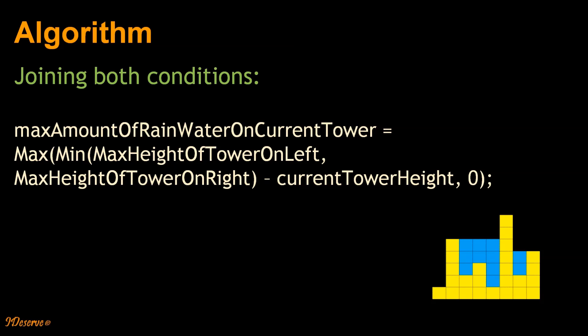So we can join both the previous conditions and it would look something like this. We just have included the previous formula with max of existing formula comma 0.